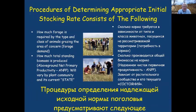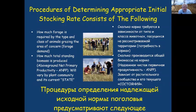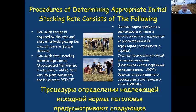The procedure for determining appropriate initial stocking rates consists of the following: First, how much forage is required by the type and class of grazing animal in the area of interest — what does the animal need to eat? Second, how much total standing biomass is produced, i.e., the above ground net primary productivity, which will vary by plant community and its current state.